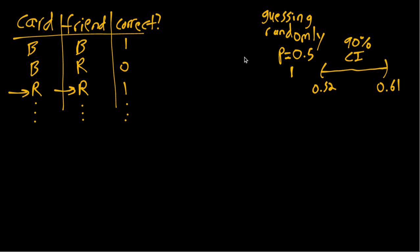You keep doing that and keep recording your data, and then at the end you check what proportion correct there was and build a confidence interval, in particular a 90% confidence level confidence interval.